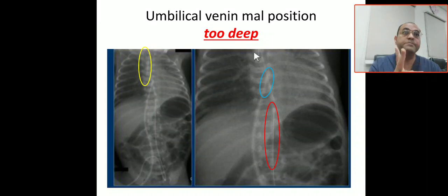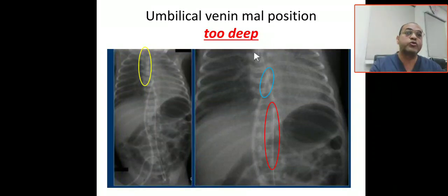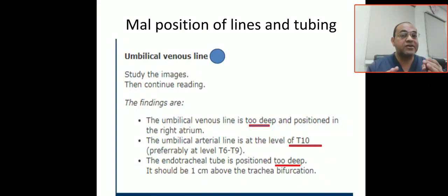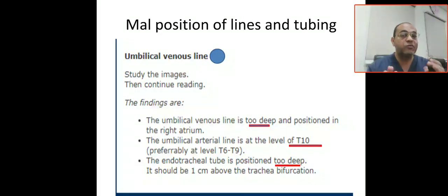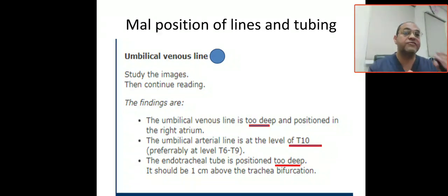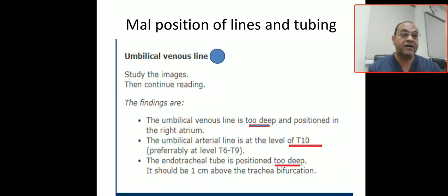To summarize: the umbilical venous catheter, the umbilical arterial catheter, and the endotracheal tube are all not in proper position. The umbilical venous catheter is too deep, positioned in the right atrium. The umbilical arterial line is at T10, and the preferable position is between T6 and T9. The endotracheal tube is also too deep and should be one centimeter above the carina.